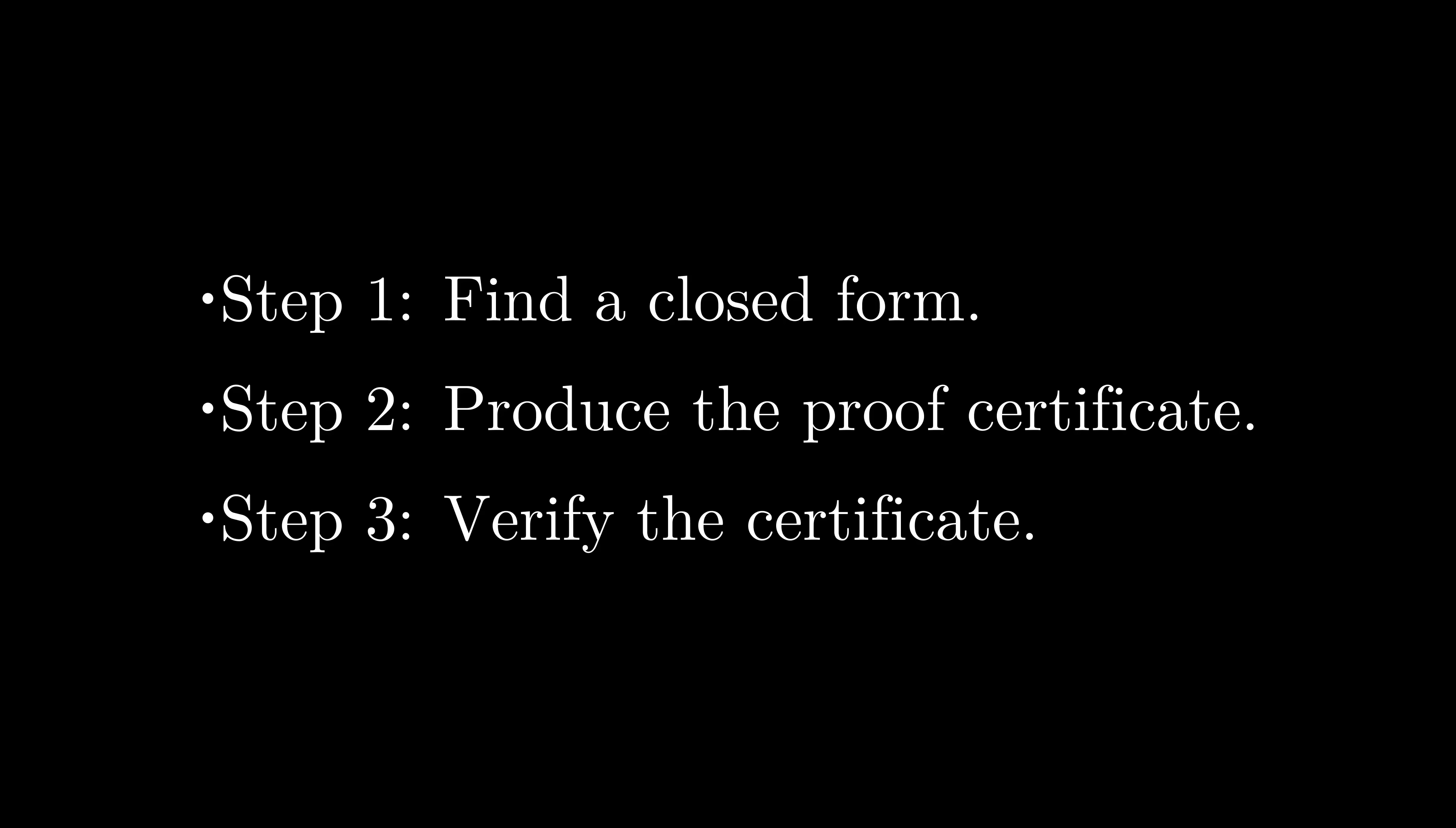We are going to break down the computer's work into three major steps. First, the computer will find a closed form for a hypergeometric series when it exists, producing a solution for our identity. Secondly, it will generate the proof certificate for our identity, something we can use to verify that the identity is in fact true. And finally, we will take a look at how we can use the proof certificate to verify the identity, either by hand or also with computer algebra systems. Let's first look at how to use the proof certificates so we can get a better idea of what the computer is looking for in the first two steps.